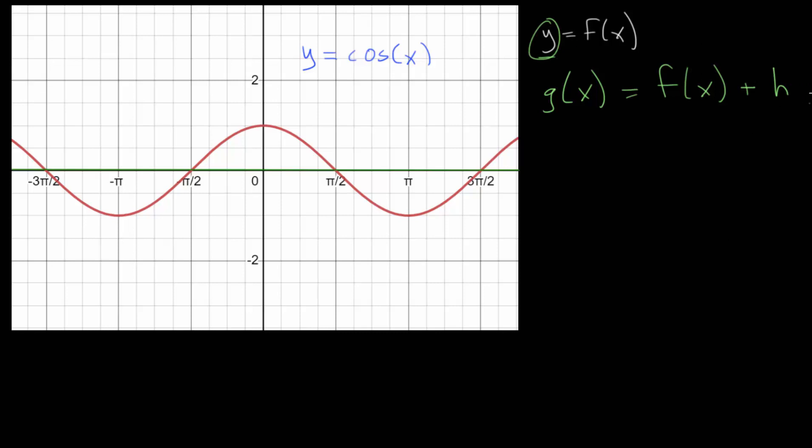essentially, all of the y values will now be h units higher. Unless h is negative, then all of the y values will be h units lower. But by adding this constant on the outside, this shifts f of x up or down h units.